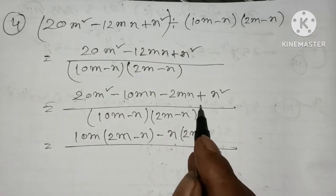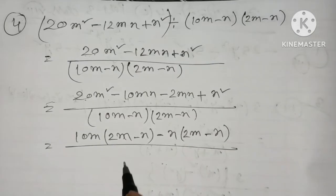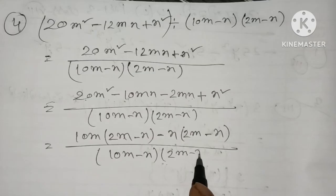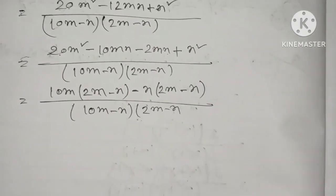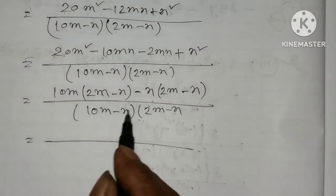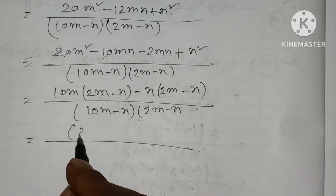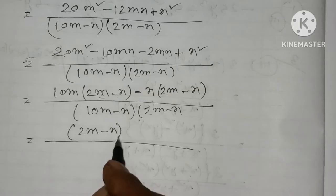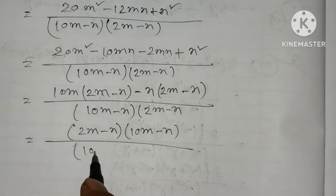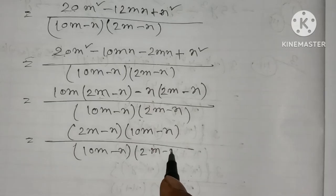2m and 2n is minus. N is minus n. 3m is minus n. The common factor result is 1m minus n, so 2m minus n.